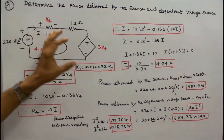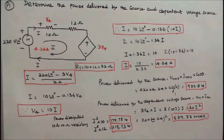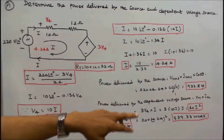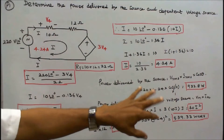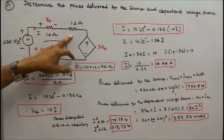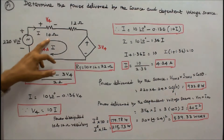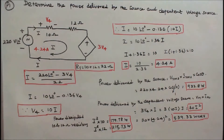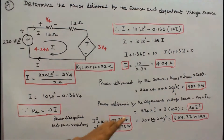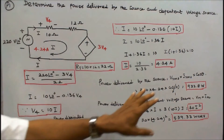Power delivered by the dependent voltage source is I times 3 times V4. Since V4 equals 10 times I, this becomes 30 times I squared. With I equal to 4.24, power equals 30 times 4.24 squared, which is 539.33 watts. Power dissipated in the 10 ohm resistor is I squared times 10 equals 179.78 watts, and in the 12 ohm resistor is I squared times 12 equals 215.73 watts. Total is approximately 932.8 watts.